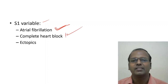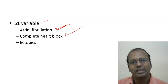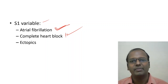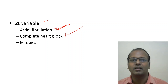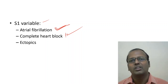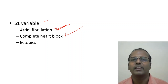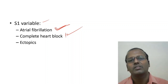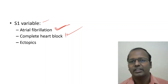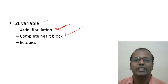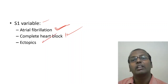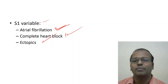In complete heart block, there is no link between atrium and ventricle — atrium contracts at its own intrinsic rate and ventricle at its own rate. This dyssynchrony leads to variable S1. Ventricular or atrial ectopics can also cause variable S1. S1 split occurs in right bundle branch block and Ebstein's anomaly. In Ebstein's anomaly, a characteristic 'sail sound' is heard due to the large tricuspid valve leaflet producing multiple clicks.